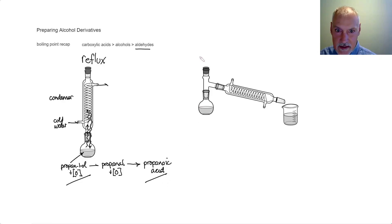In this second technique, that's called distillation, the results will be slightly different. I start again with my propan-1-ol and my oxidizing agent. It will be converted into the aldehyde, propanal.